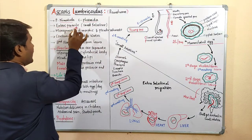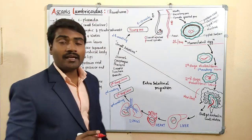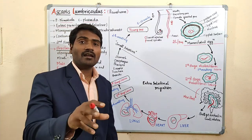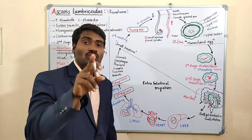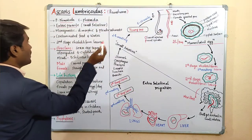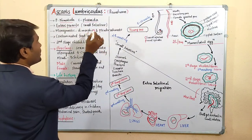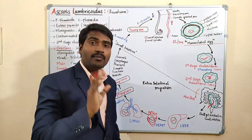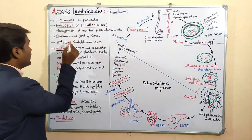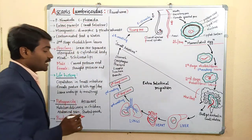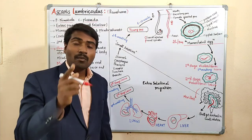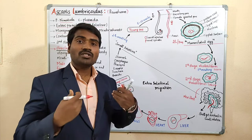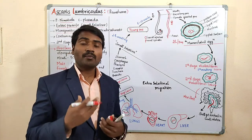It is an enteric parasite. 'Enteron' means digestive tract or alimentary canal. It lives in the small intestine only. Hence it is called an enteric parasite. It is also a monogenetic parasite, meaning its complete life cycle occurs in a single host. The host here is man.